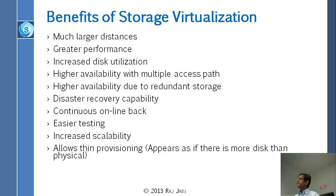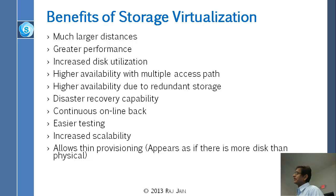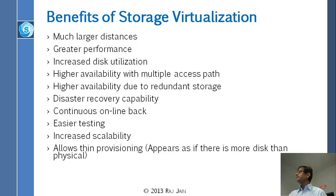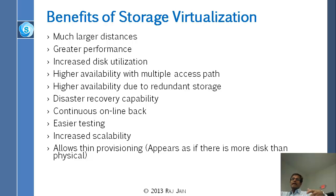Talking about the benefits: you can go much longer distances, get much better performance, much better disk utilization, higher availability with multiple access paths, and higher performance because of multiple access paths. Higher availability due to redundant storage — you can write on two disks while you need to write only on one. Disaster recovery capability means if something happens, you still have the data saved from other places. Continuous online backup, easier testing, and increased scalability. Scalability means you have one gigabyte and want to make it 10 gigabyte or one terabyte, and you can just do that in the background.